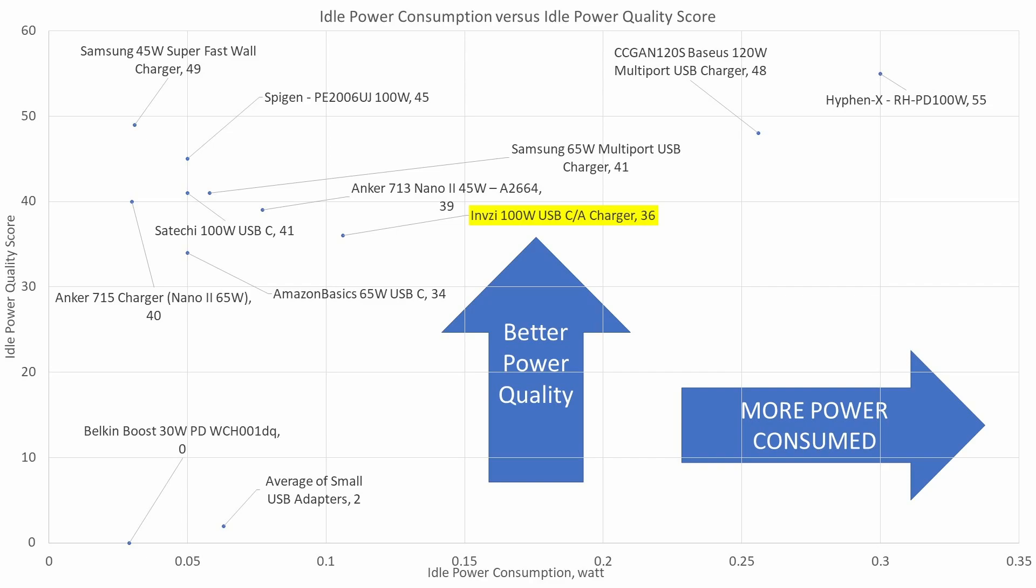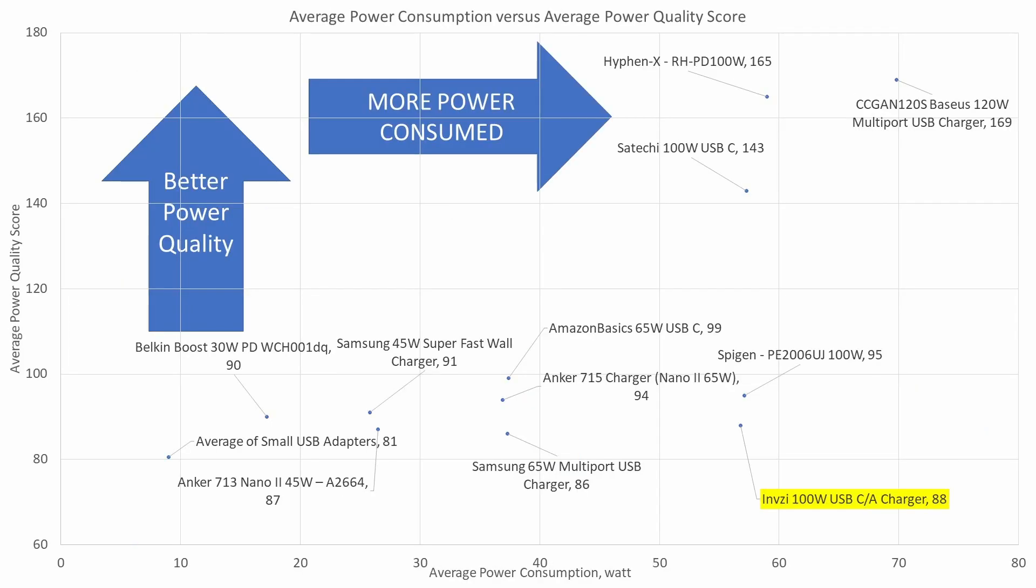When we take a look at the idle graph, we can see that it's okay. It's actually not bad for the 100 watt class adapters. When we look at the overall performance though, we can see that it is the worst one. There are 65 watt adapters that handily will beat this one, like the Anker Nano 2 or the Amazon Basics power adapter.